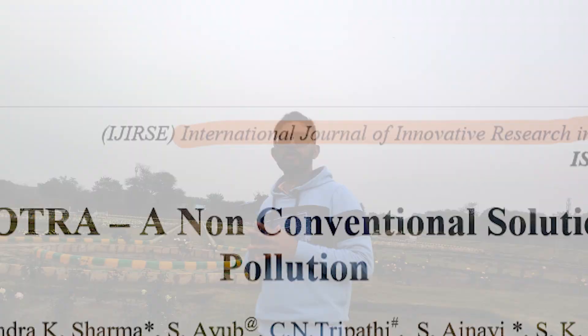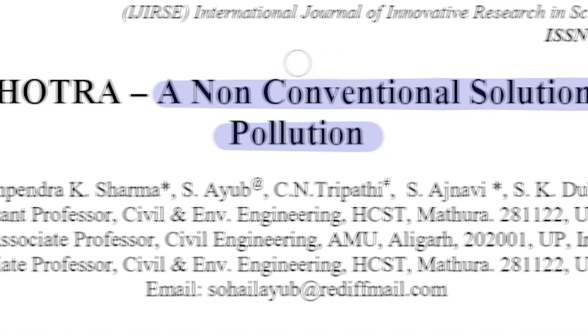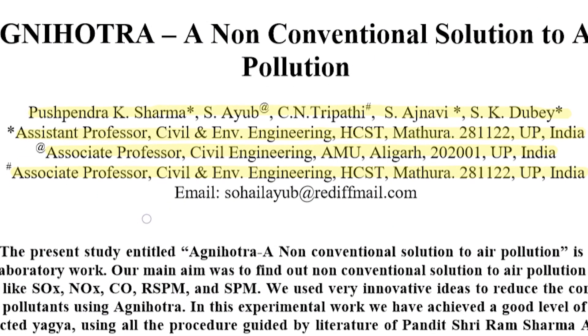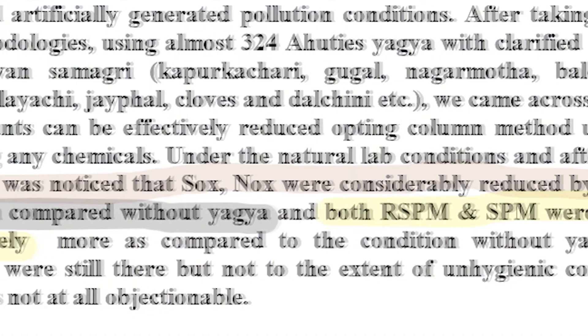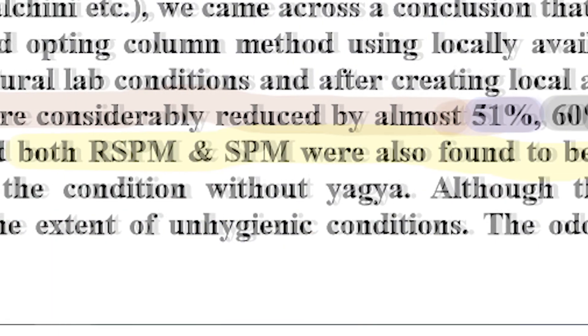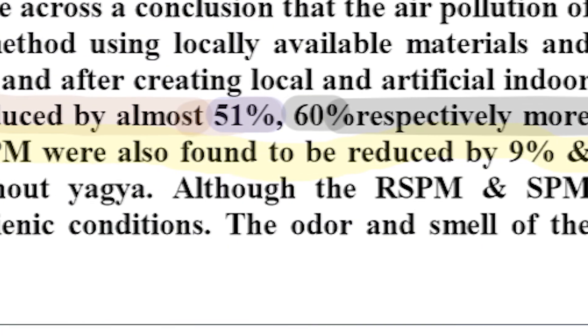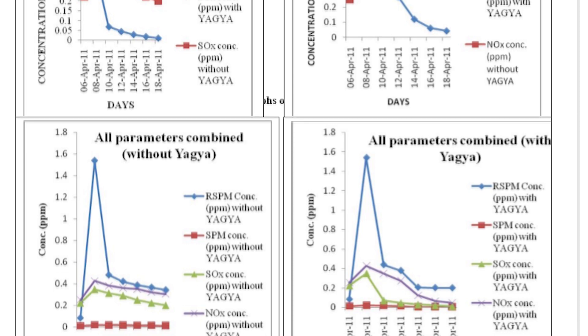Research published in the International Journal of Innovative Research in Science and Engineering was a non-conventional solution to air pollution. It was conducted by Professor Pushpendra Kumar from HCST Mathura and Professor Sohail Ayub from Aligarh Muslim University. They found Sulphur Dioxide was reduced by 51%, Nitrogen Dioxide by 60%, RSPM by 9%, and SPM by 65%. After that, there was a 55% reduction in bacteria, 15% reduction in fungi, and 79% reduction in pathogens.